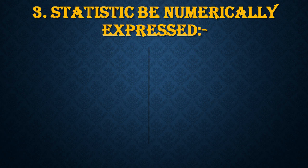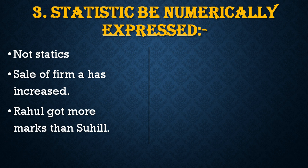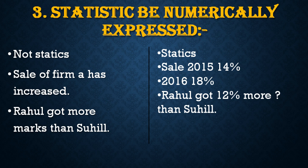The next point: statistics must be numerically expressed. For example, certain things are not considered as statistics, such as 'sale of firm has increased' — that is not a statistic. 'Rahul got more marks than Sushil' — that is also not a statistic. Whereas, 'the sale in 2015 was 14% and in 2016 it increased by 18%' — now you can compare, therefore it is a statistic.